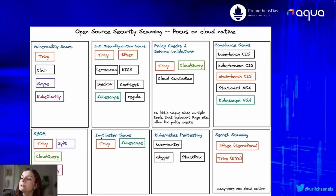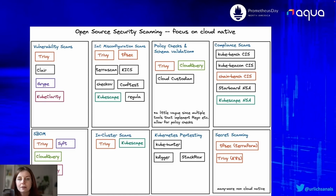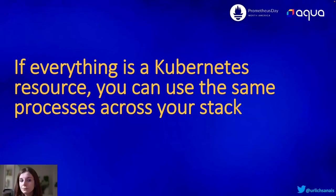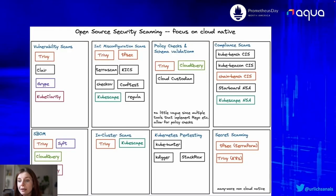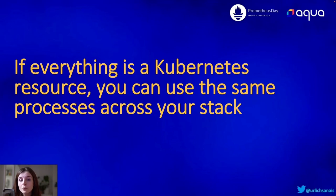The main tools there are Trivy and Kubescape. I'm going to use Trivy because I'm biased, but you can use any tool as long as it allows you to export metrics and is producing metrics of those security reports. The additional benefit of actually integrating a security scanner within your cluster is that if everything is a Kubernetes resource you can use the same processes across your stack and integrate that tool with all of your other tools such as your observability stack.